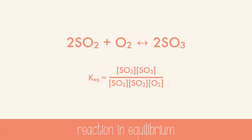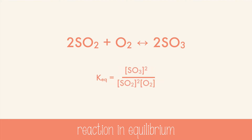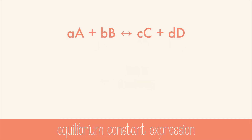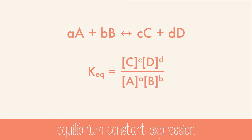But this gets a bit messy with higher coefficient numbers, so we'll clean it up just like we do in math. A number times itself is the number squared, so we can write the chemical once and put the coefficient as an exponent. So here's the formula for an equilibrium constant expression: in a balanced chemical equation, KEQ is the concentration of the products divided by the concentration of the reactants, where the coefficients are written as exponents.